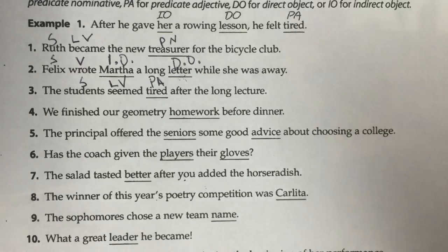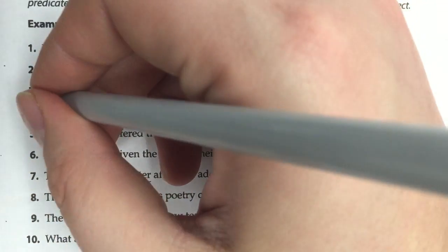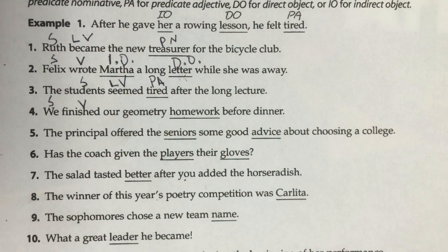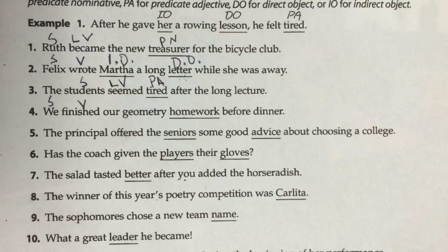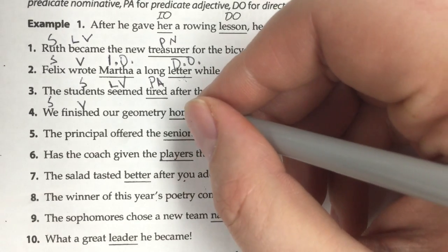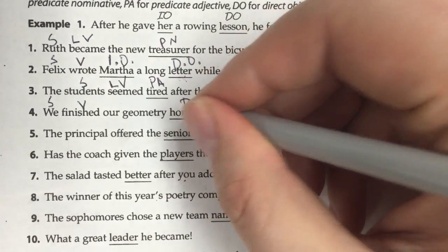Number four: 'We finished our geometry homework.' We is the subject and finished is an action verb. After a transitive action verb there will be a direct object. To find it, ask who or what after the verb: we finished who or what? We finished the homework. So homework is our direct object.